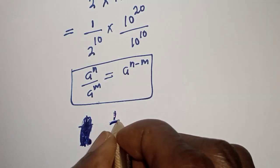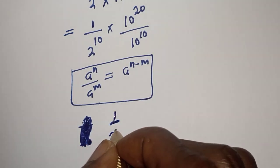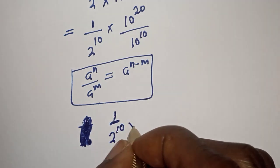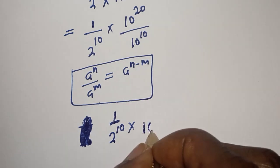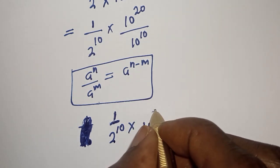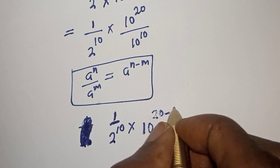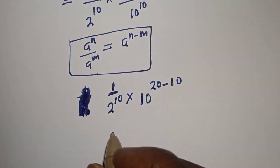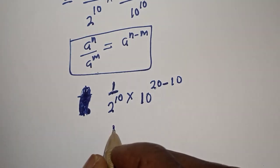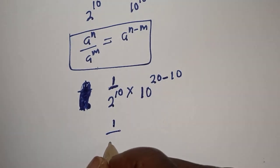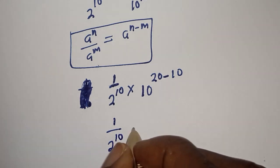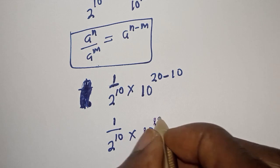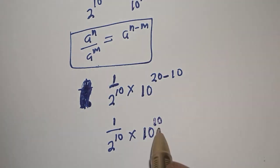So we get 1 over 2 raised to power 10, multiplied by 10 raised to power 20 minus 10. That gives us 1 over 2 raised to power 10, multiplied by 10 raised to power 10, because 20 minus 10 is 10.